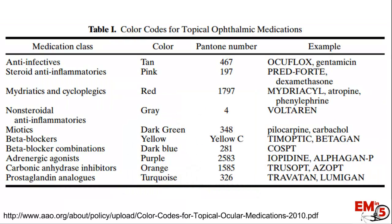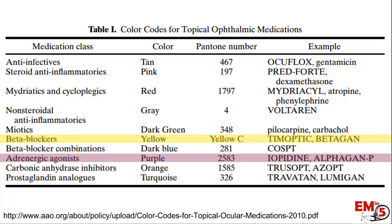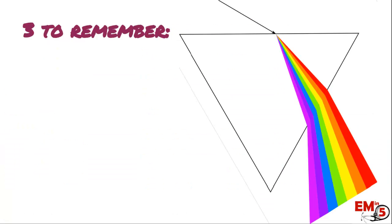Here are a couple of other color-coded categories from the policy paper. Beta blockers used for acute angle closure glaucoma come in yellow. Purple tops are the adrenergic agonists, also for acute angle closure glaucoma. The same goes for the carbonic anhydrase inhibitors.